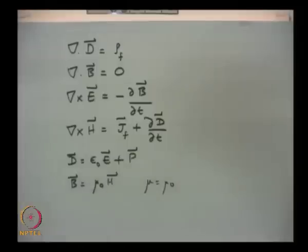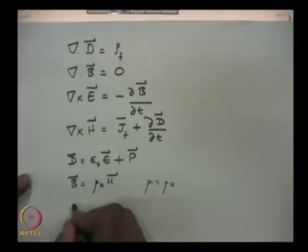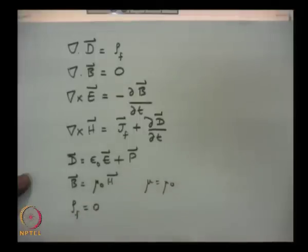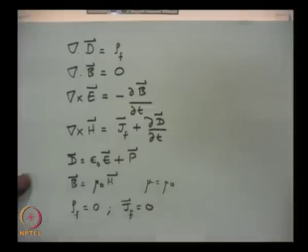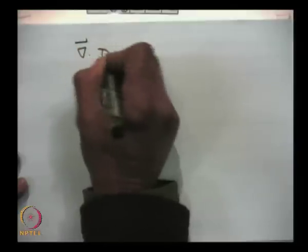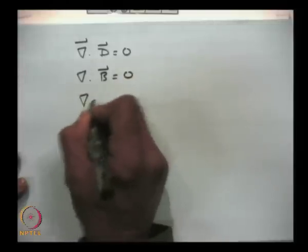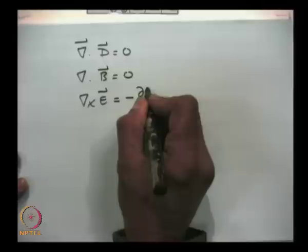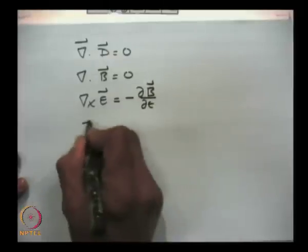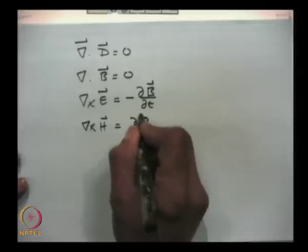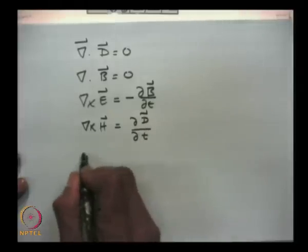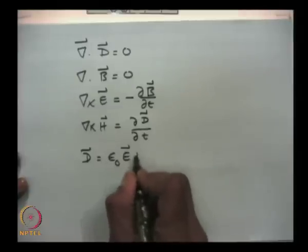ρ_F is the free charge density. In this course we will not have any free charges, so ρ_F = 0, and no free currents, J_F = 0. So primarily we will have four equations: divergence D = 0, divergence B = 0, curl E = −∂B/∂t, and curl H = ∂D/∂t, with D = ε₀E + P.